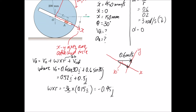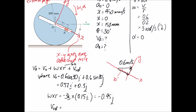The last term in the velocity equation is V_rel. Since we're rotating with the coordinate system, we only see the block moving within the slot along the x-axis. We're told the rate is x-dot = 450 mm/s = 0.45 m/s in the positive i direction. So V_rel = 0.45i, meaning the block is moving away from us.